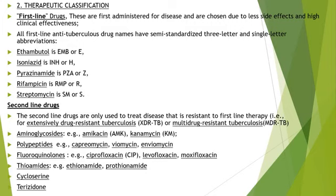The second line of drugs are only used to treat disease resistant to first-line therapy, that is extensively drug-resistant tuberculosis (XDR-TB) or multi-drug resistant tuberculosis (MDR-TB). Second-line drugs include: aminoglycosides such as amikacin and kanamycin; polypeptide drugs such as capreomycin, viomycin, and enviomycin; fluoroquinolones such as ciprofloxacin, levofloxacin, and moxifloxacin; and thioamides such as ethionamide and prothionamide, as well as cycloserine and terizidone.